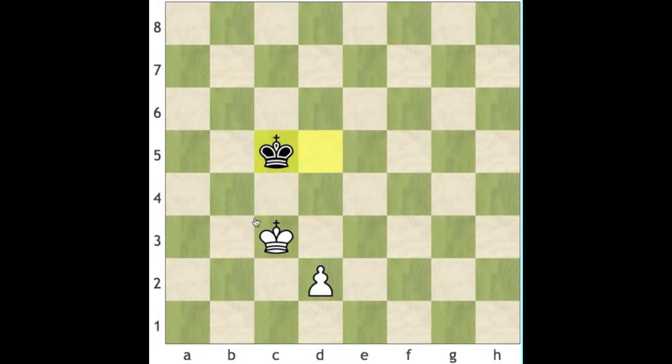Like move to c3 he just follows you. And you really can't make any progress with this. You can check him, you can keep moving around but there's no way you can really push him from this area. There's nothing you can really do to push him. Eventually you are going to push him towards the 8th rank and it's going to be a stalemate most likely.